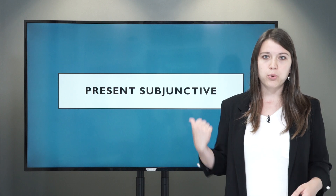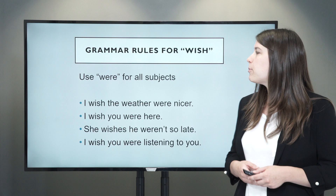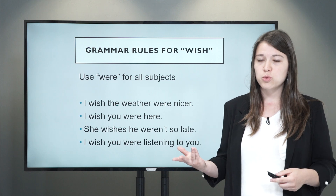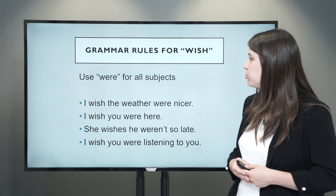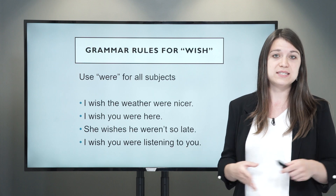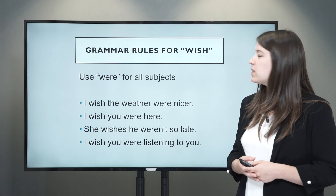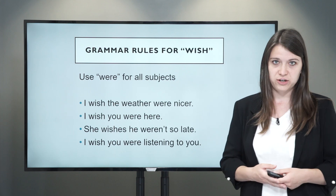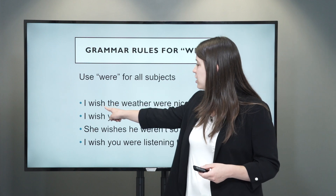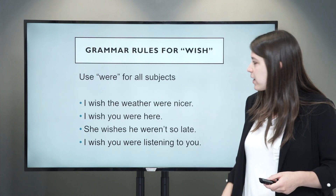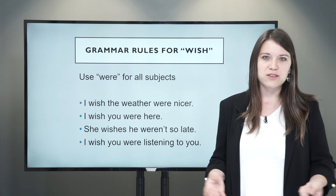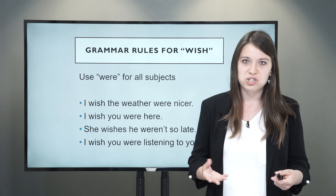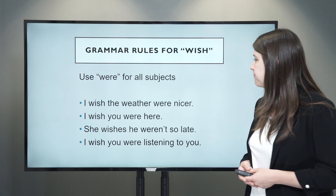So let's start with the present subjunctive. With the present subjunctive, we use the verb 'wish,' and with 'wish' we use the past tense of 'to be' — 'were' — for all subjects. So it doesn't matter what the subject is, we use 'were.' Let's look at some examples. 'I wish the weather were nicer.' So here you have the subject 'I wish,' and then 'the weather were nicer,' which means that probably that day it's raining and the weather isn't nice — so you're talking about a hypothetical or imaginary situation.